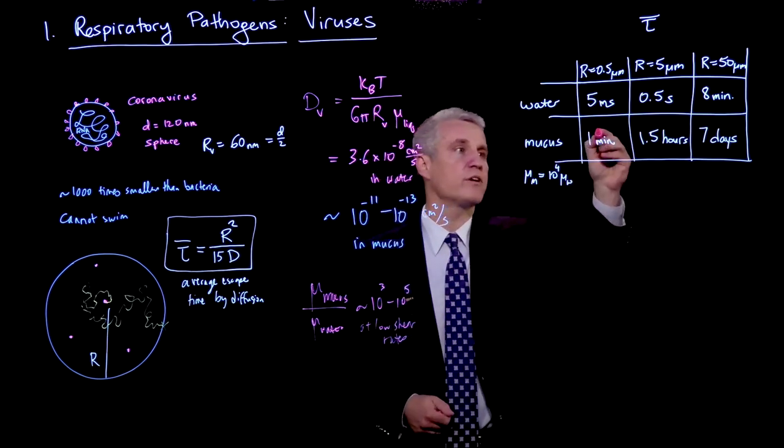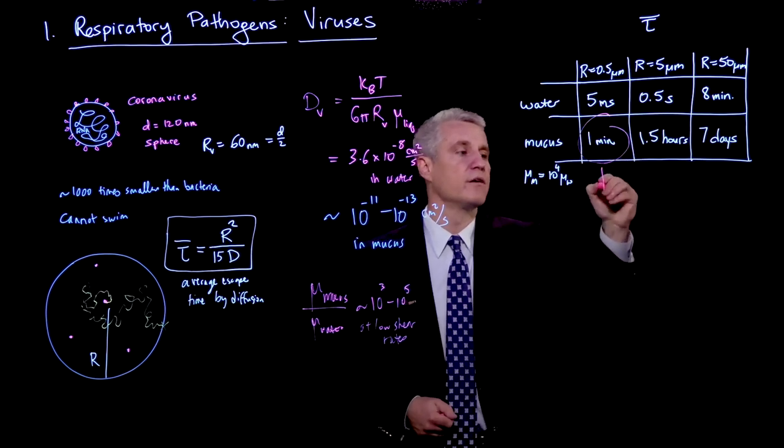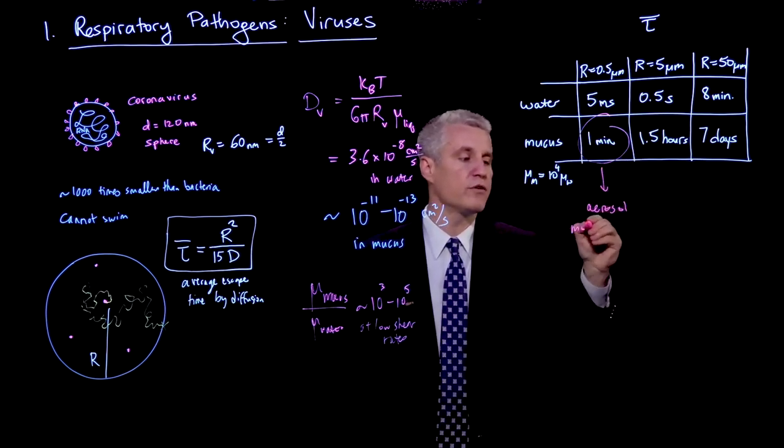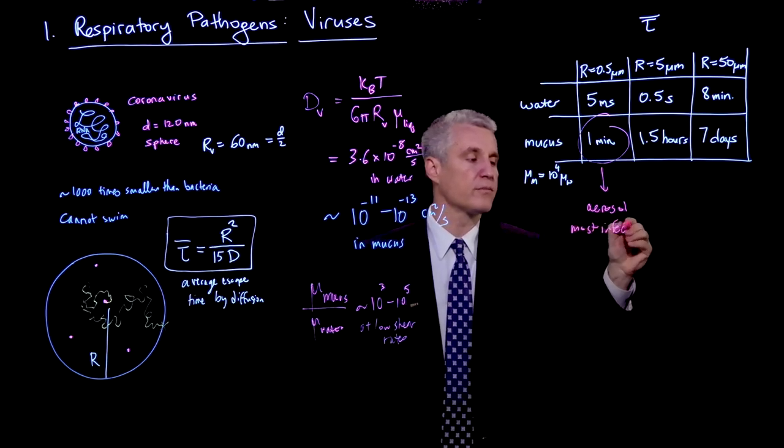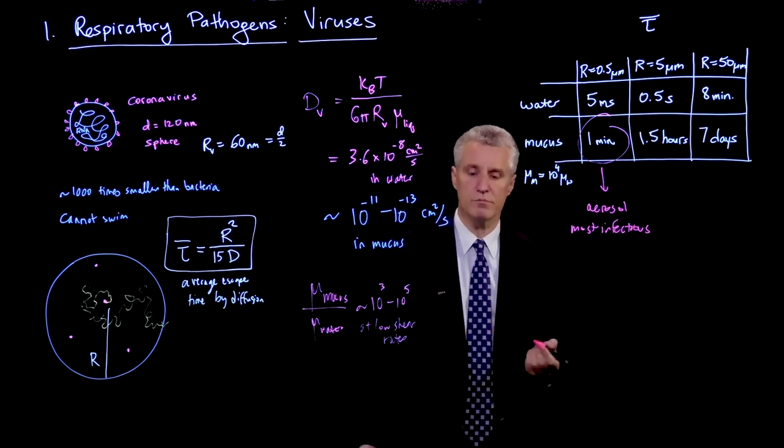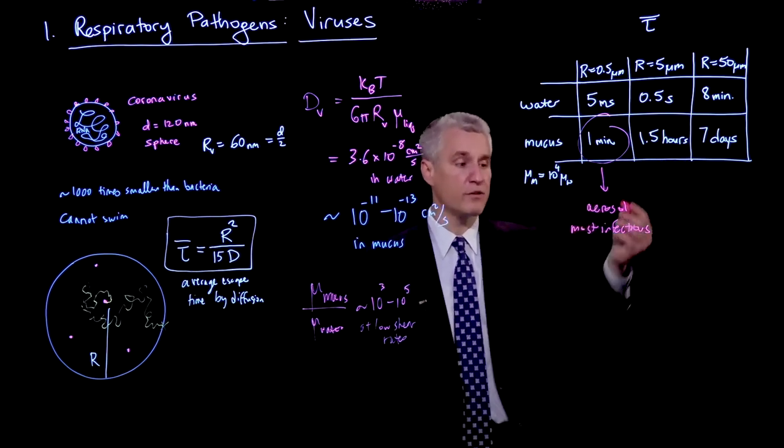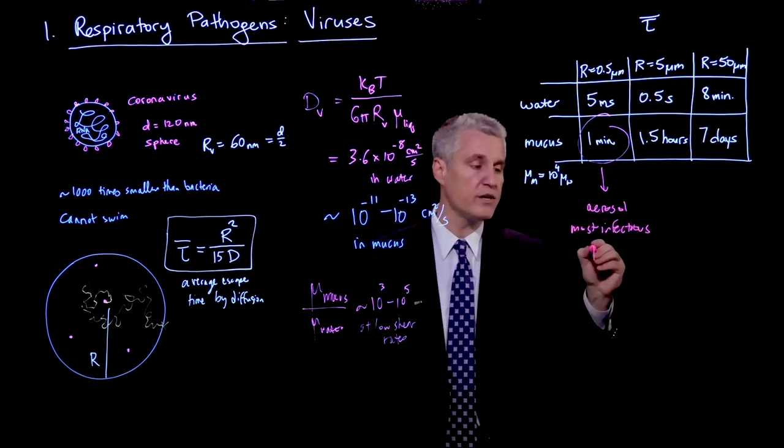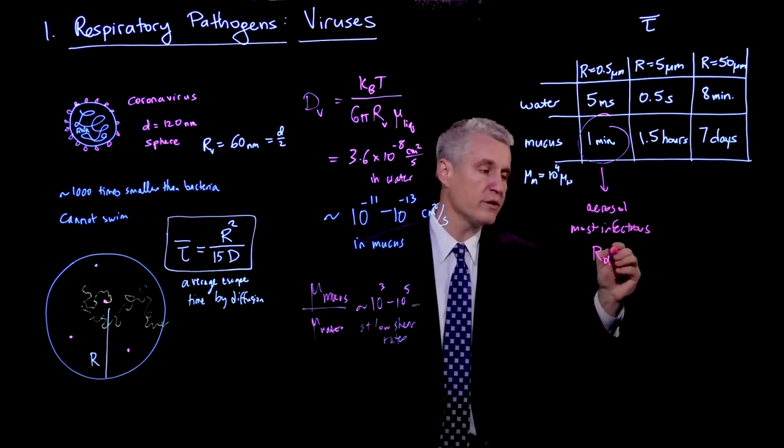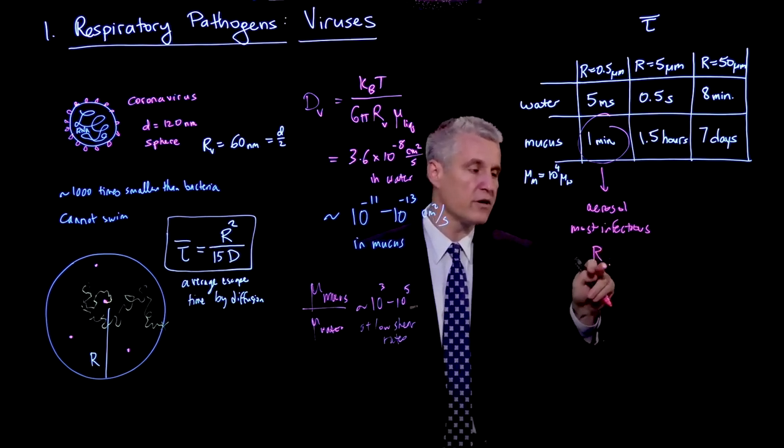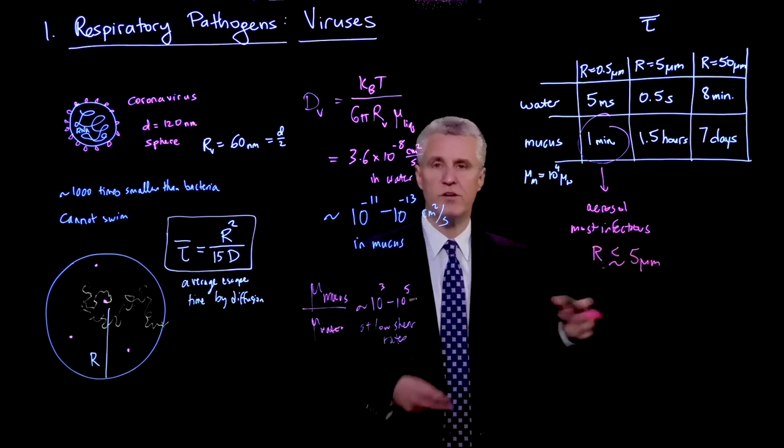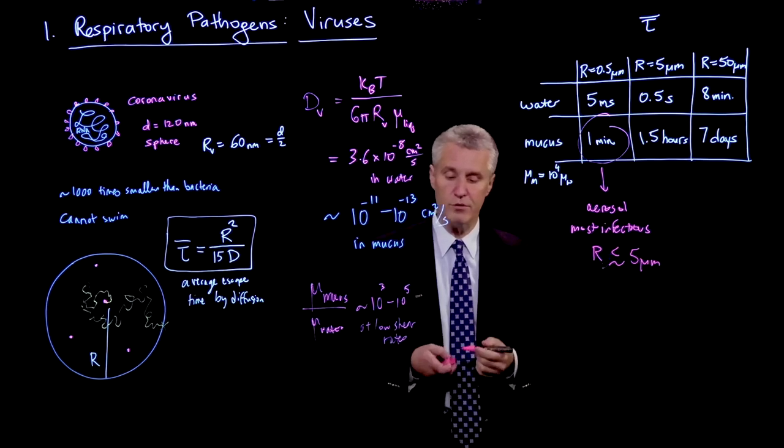So if the virus is going to transmit itself, it makes a lot more sense to be in aerosol droplets. And so it's really here. The aerosol droplets are the most infectious because they are able to, basically, the virus are able to get out. And based on this calculation, roughly speaking, if the R of the drop is less than around 5 microns, those are the ones we would expect to be the most infectious.